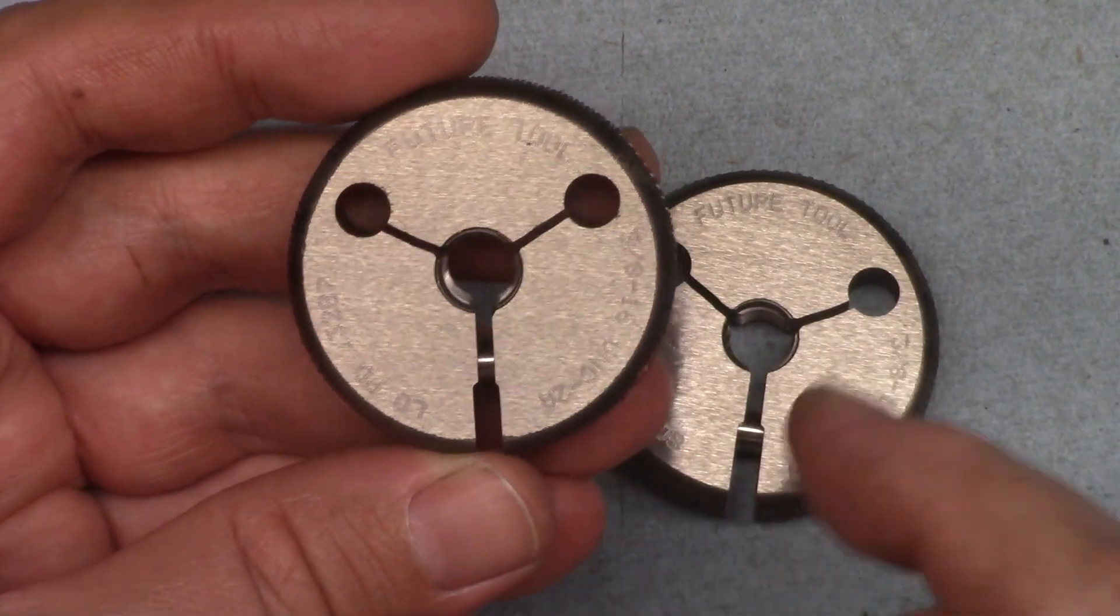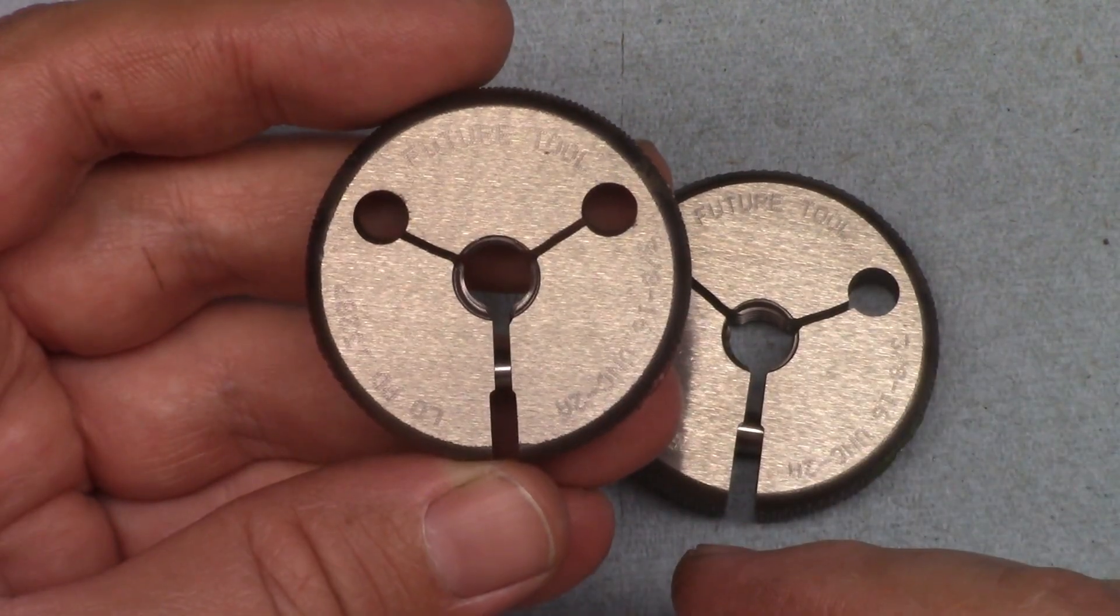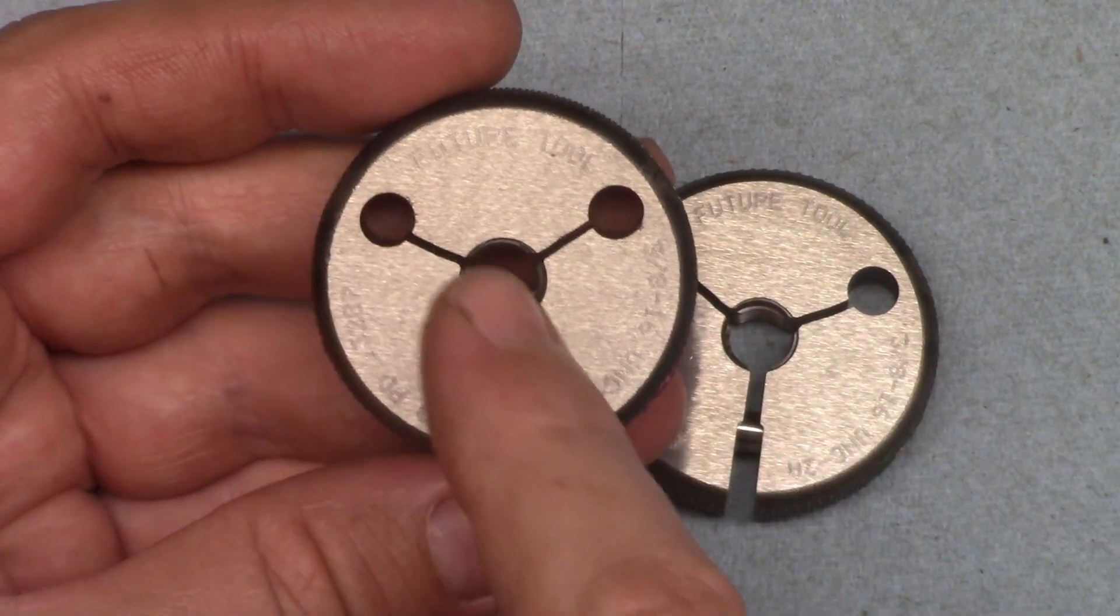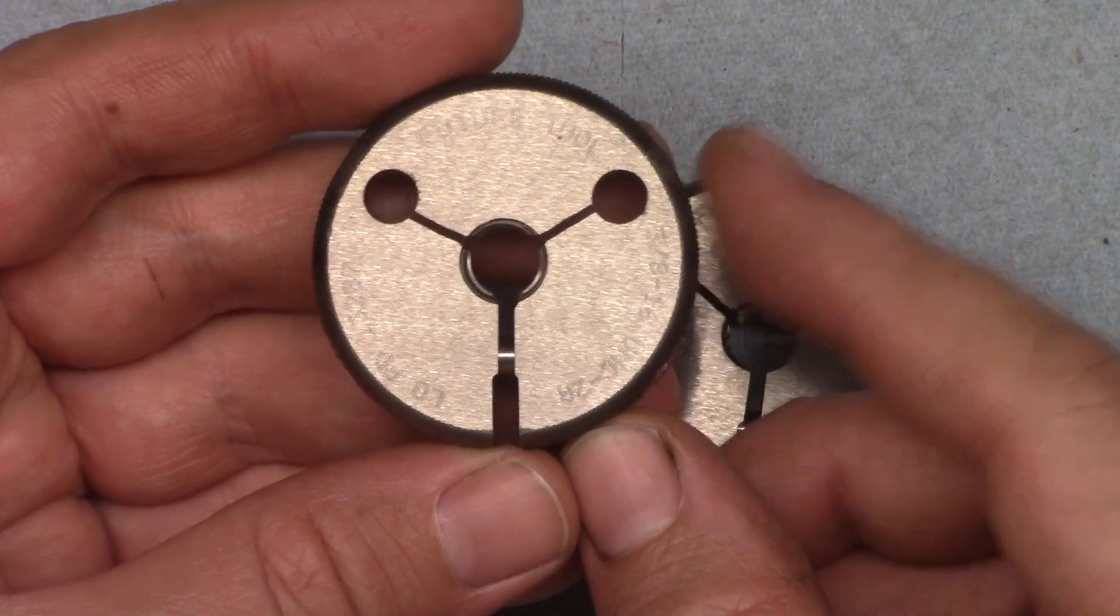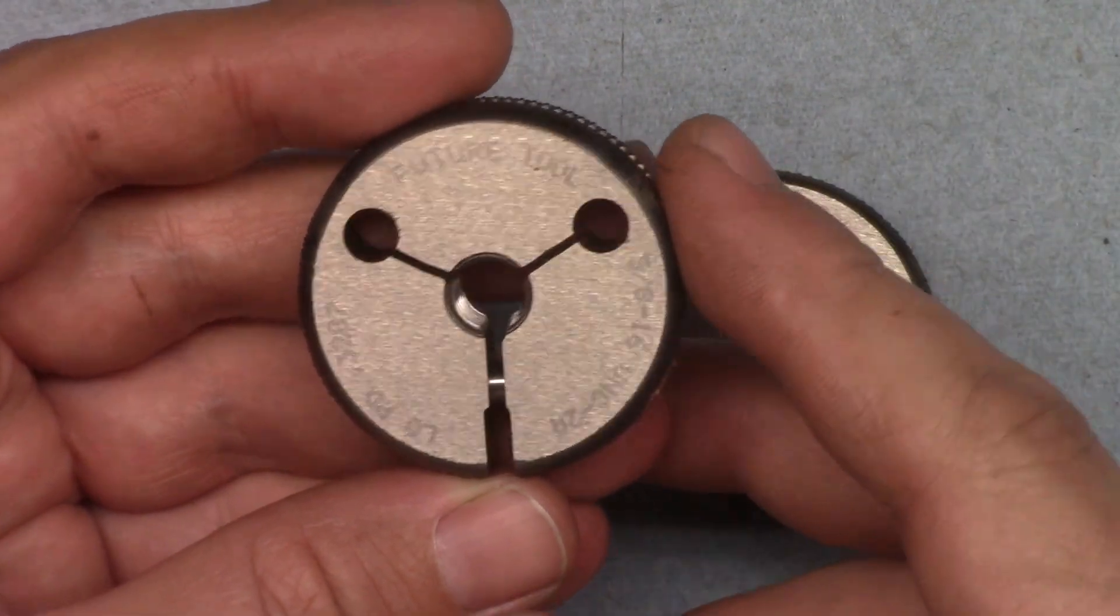Not all ring gauges are adjustable, by the way, so if yours don't have this flexure and adjusting screw, they'll need to be replaced when they eventually wear. The good news is, the non-adjustable ones are significantly cheaper.